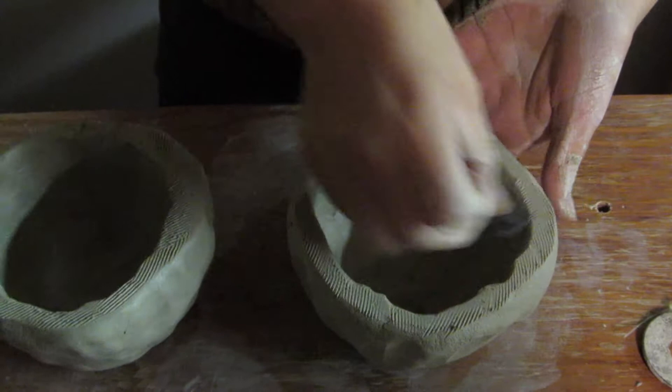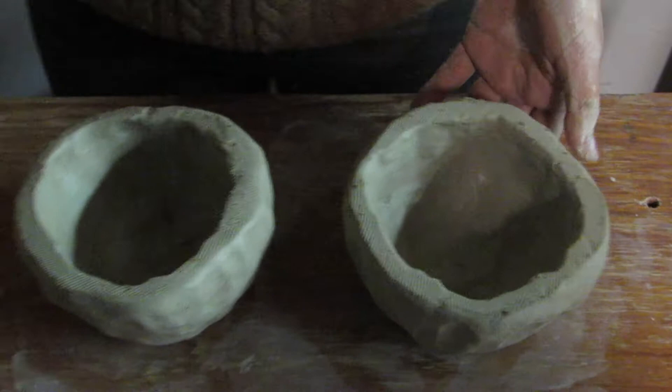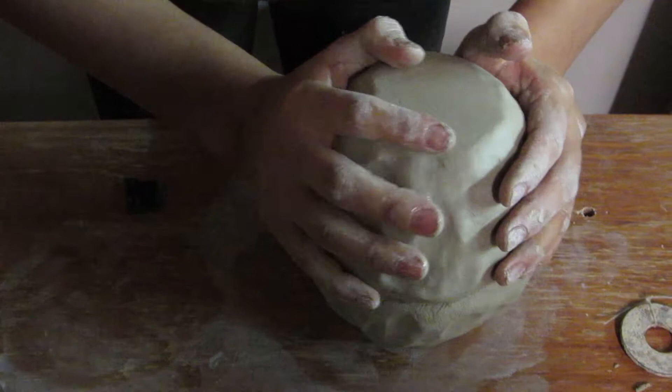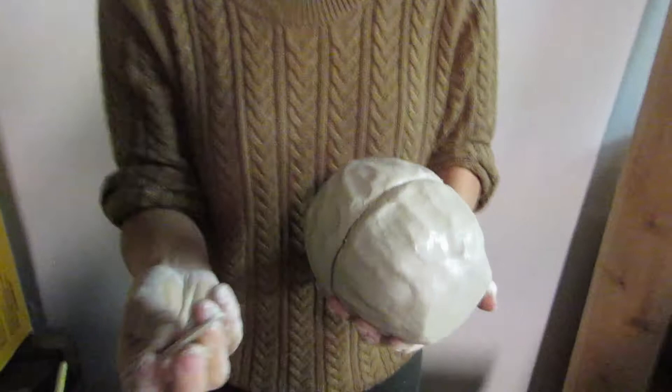Okay, then you're going to scratch it all around. You can add a little water where it can be easier to connect them. So I'm going to put this on top. And after you're done scratching them and putting a little water, you're going to attach them with the popsicle stick.